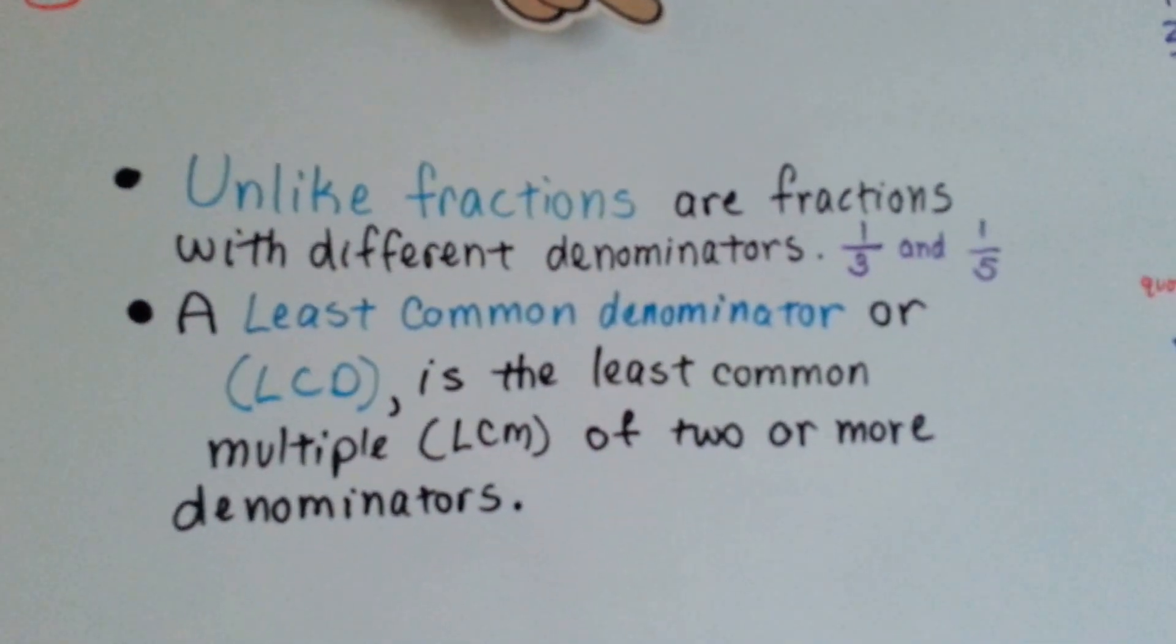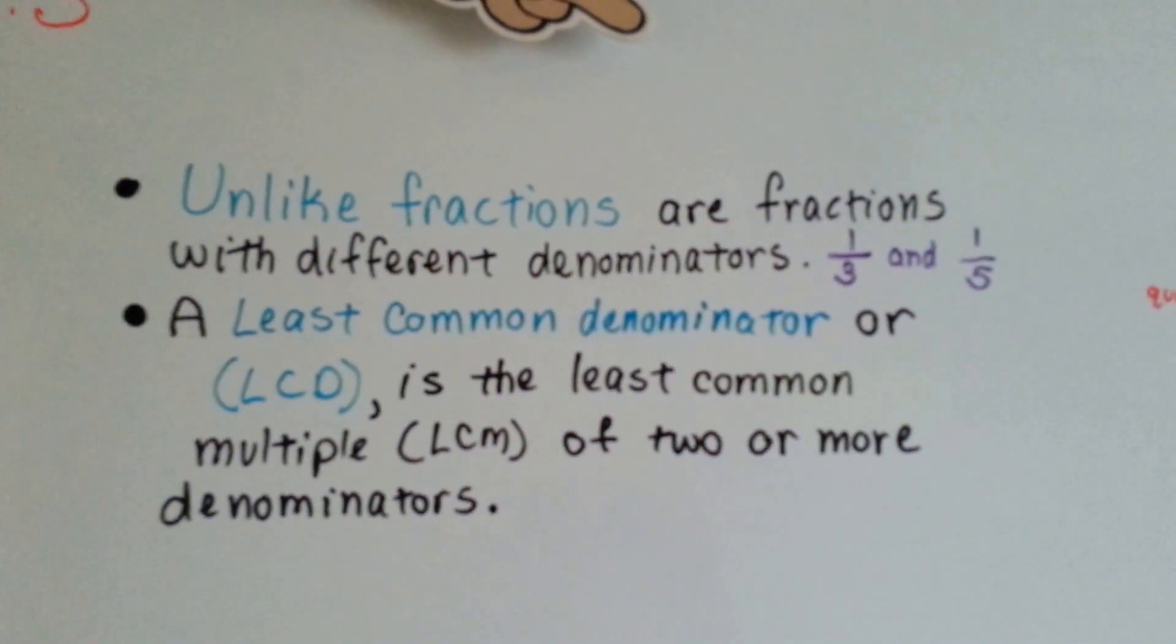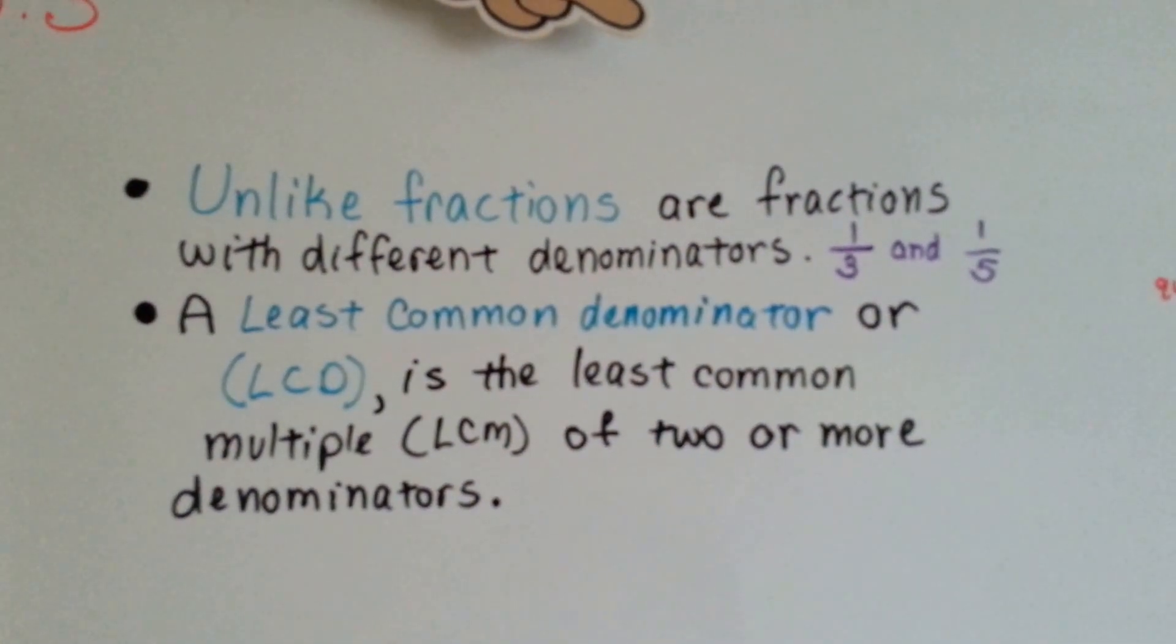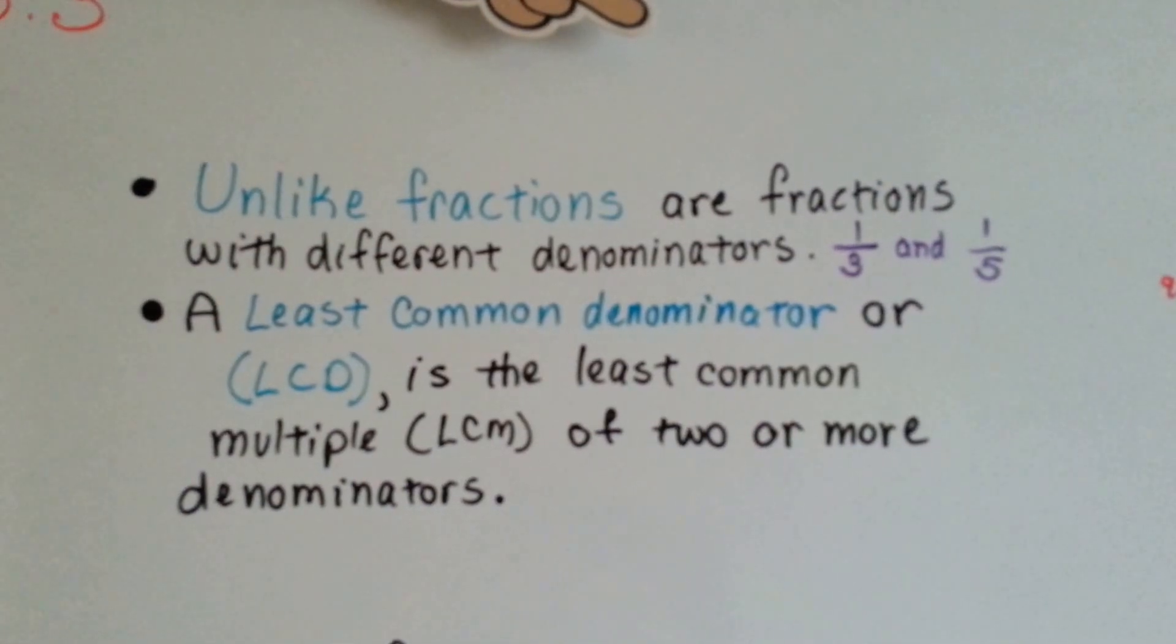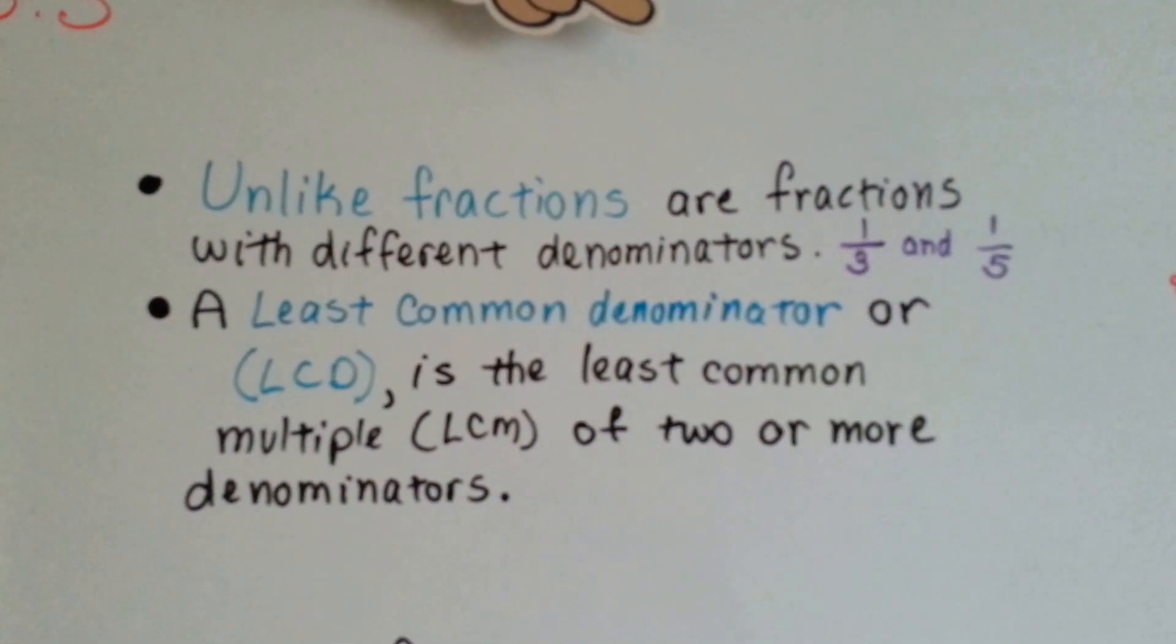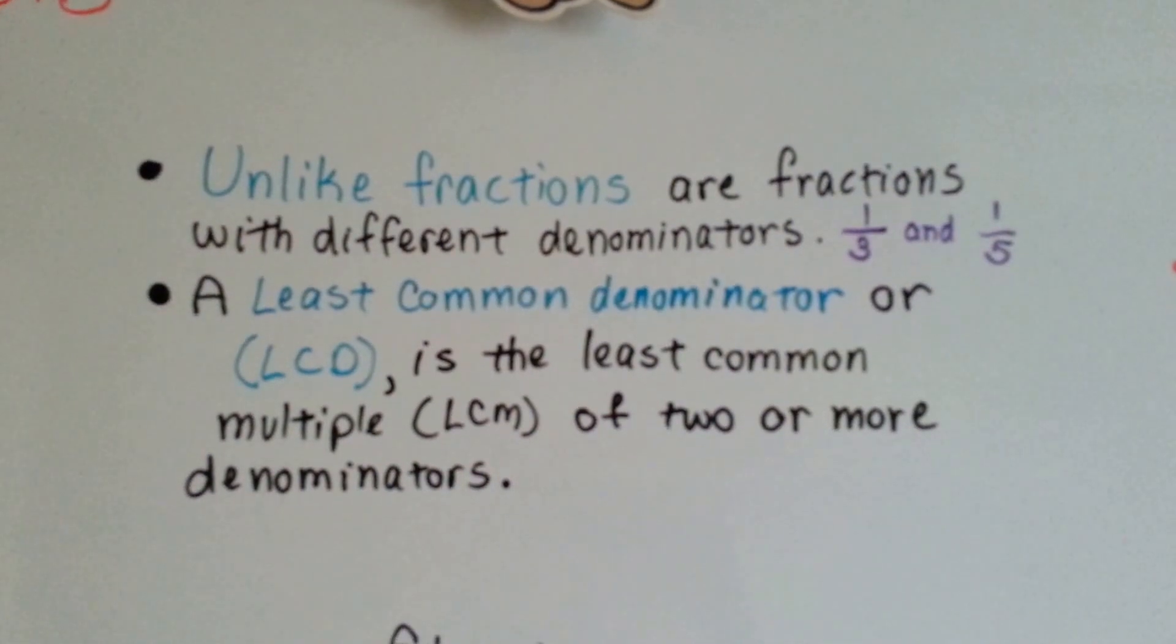Unlike fractions are fractions with different denominators, like one-third and one-fifth. A least common denominator, or LCD, is the least common multiple of two or more numbers.